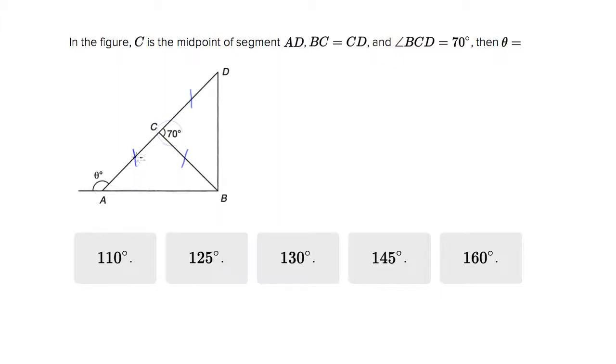Well, since we know that these two sides are the same length, this is an isosceles triangle, so we know these two angles must be the same.